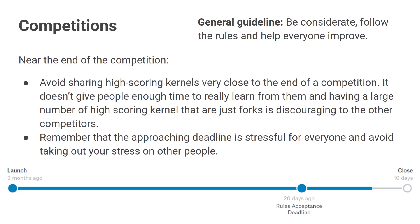As the competition starts to get near closing, I would avoid sharing a high-scoring kernel. If you're really high up on the leaderboard and doing really good work and you really want to share it with people, I would wait until after the close of the competition — probably not within a week of the close. The reason is if you have a really good kernel near the end of the competition, people aren't going to get the time to sit down, understand what you're doing, and maybe incorporate some of that into their own work. Also, a lot of people will probably fork that kernel and end up with a high score, surpassing people who've been working on the competition for quite a while — and that feels a little bit discouraging.